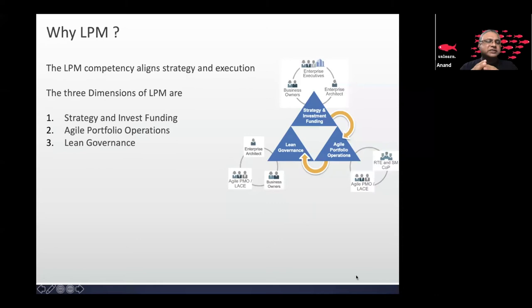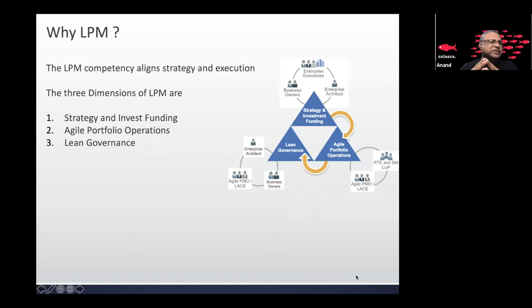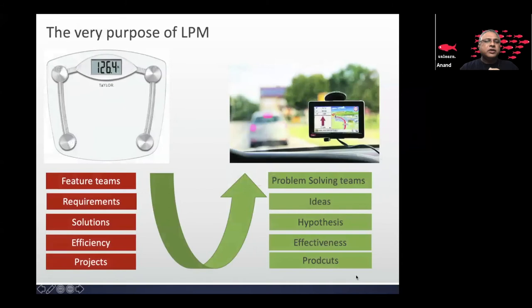What is lean portfolio management? It has three important pillars: strategy and investment funding, how you maintain operations of the portfolio, and governance. The beauty of these three pillars is that they're all collaborative in nature — it's not my way or the highway. It is a collaboration between multiple people, because we believe we can't solve problems alone. A cumulative set of ideas must come together to solve great problems.